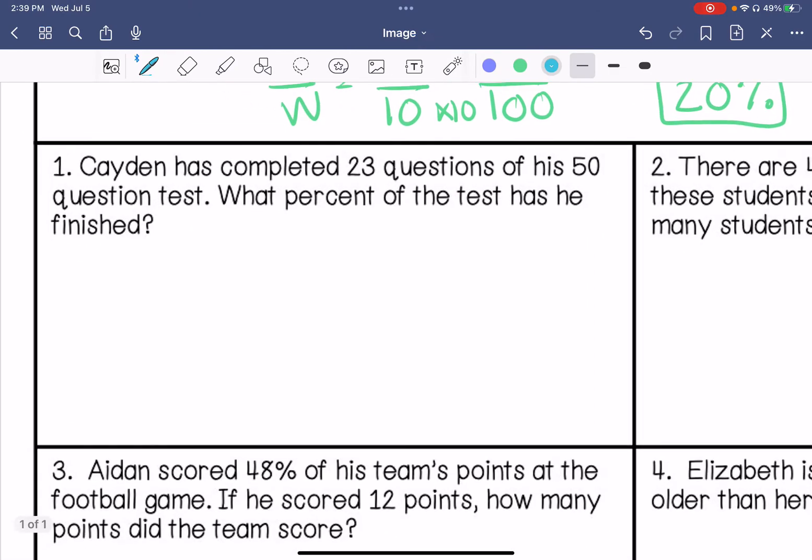All right, number one. Caden has completed 23 questions of his 50-question test. What percentage of the test has he finished? So my part over whole, he has completed 23 out of 50 questions. We want to know what percent that is. 50 times 2 is 100, so 23 times 2 is 46. He's completed 46% of the test.